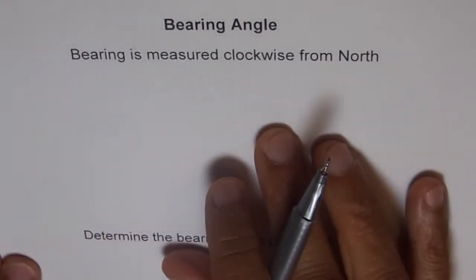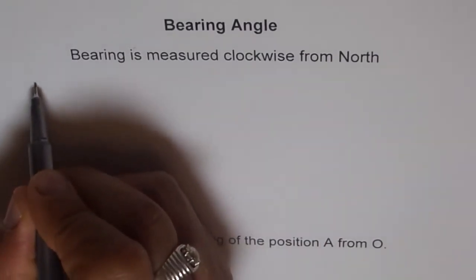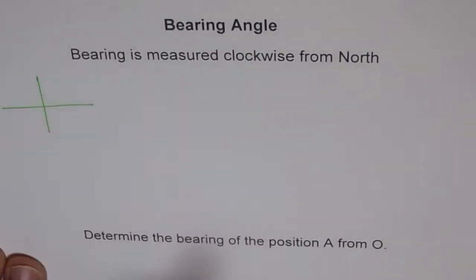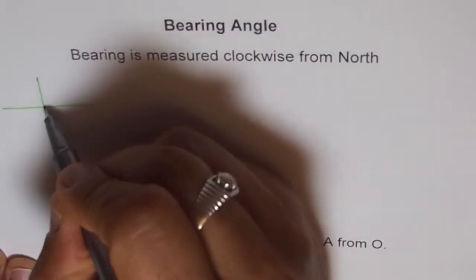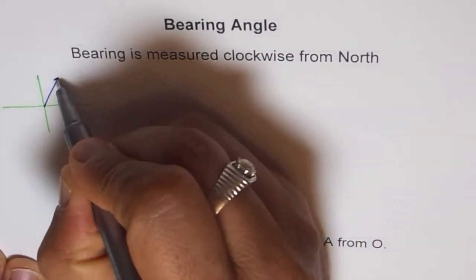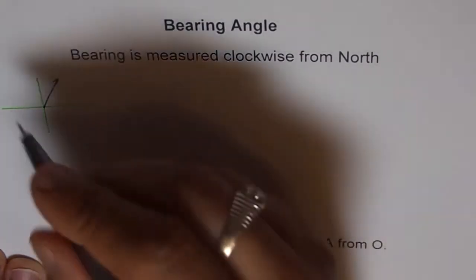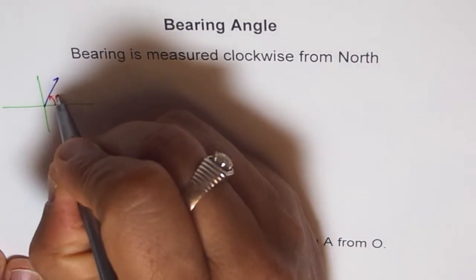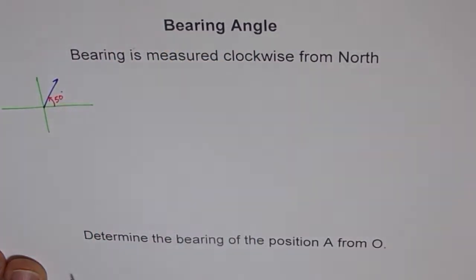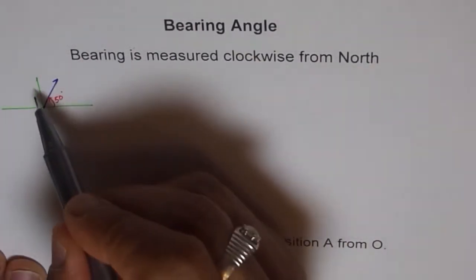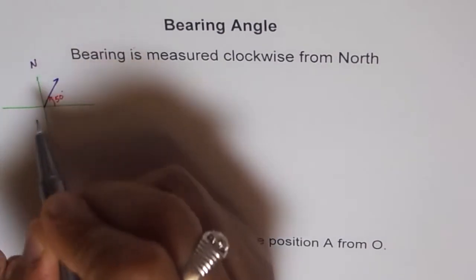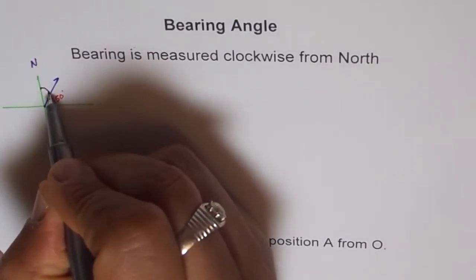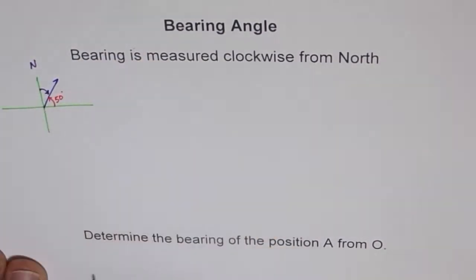Now I'll show you an example so that you understand what it is. In a coordinate system, if I draw an angle like this — let's say from here, this is around 50 degrees. Then the angle of bearing will be from north, clockwise. Clockwise means in this direction, and this is our north. From north, it will be this much angle. So this is our angle of bearing.